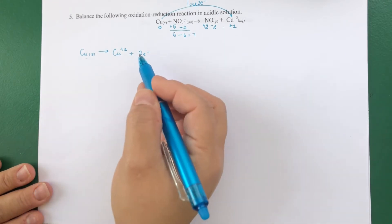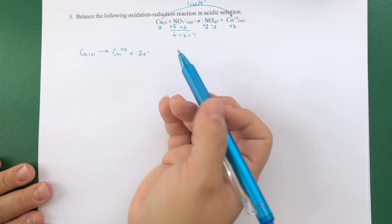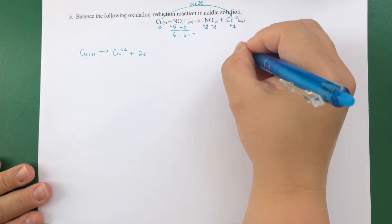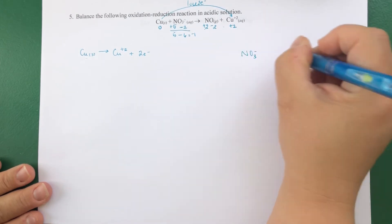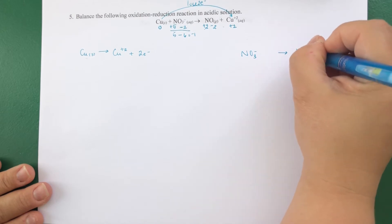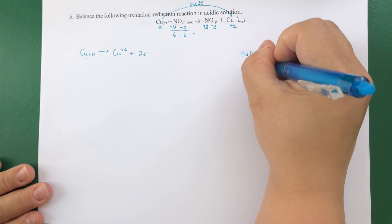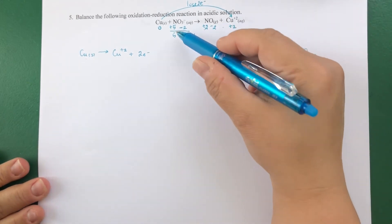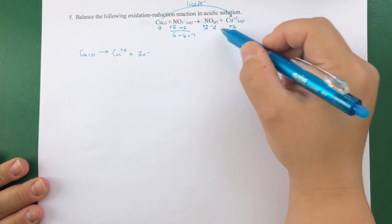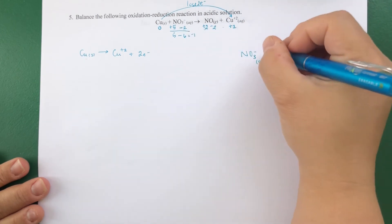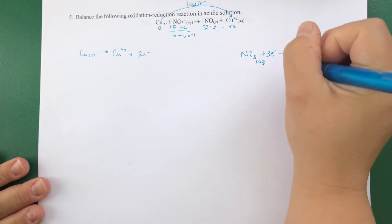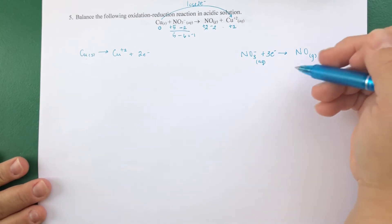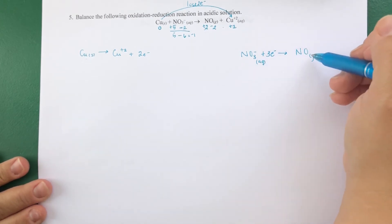Nitrogen goes from plus 5 to plus 2, so the nitrogen half-reaction is NO₃⁻ → NO gas. The nitrogen gains three electrons, so: NO₃⁻ + 3e⁻ → NO. Now I need to balance oxygens — there are three oxygens on the left and one on the right, so I add two waters to the right side.